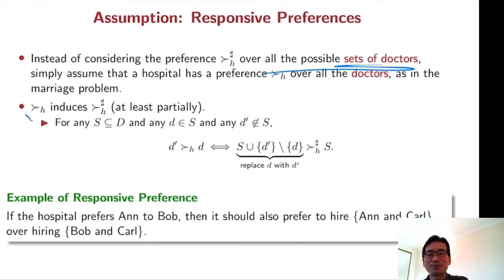And then this preference over doctors induces a preference over set of doctors. For instance, if this hospital prefers D' over D, then the hospital wants to replace D with D' in any set of doctors that includes D.